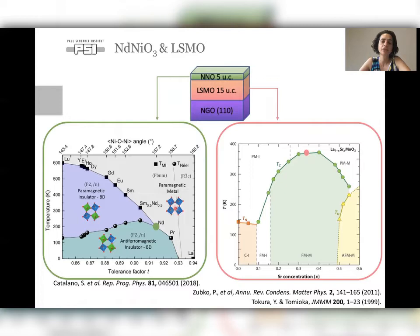The neodymium nickelate has a perovskite structure with the nickel-oxygen forming octahedra, and between the octahedra you have the lanthanide. Because the lanthanide is too small, this octahedra will have to rotate from this 180 degrees angle to accommodate the structure. So the smaller is the lanthanide, the smaller is the nickel-oxygen angle and also the smaller is the tolerance factor.